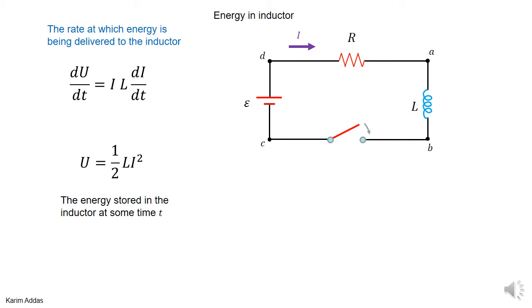idea that we did in capacitors. We wrote down the energy in terms of the charge or the capacitance and the potential difference, but then we were also able to write down the energy in a capacitor in terms of the electric field. So let's see how we can do that.